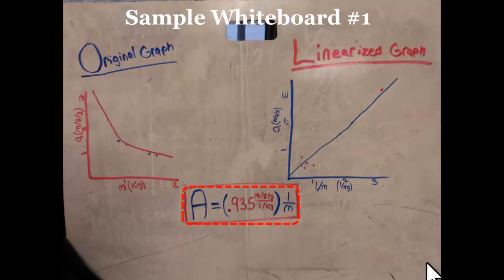Here's an example whiteboard from our data. We were looking at and trying to find the relationship between the acceleration of an object or a system of objects and its mass. When this group graphed acceleration versus mass, they found an inverse relationship. In order to find the equation for how acceleration is related to mass, they linearized this graph by graphing acceleration versus the inverse of mass, or acceleration versus one over m.